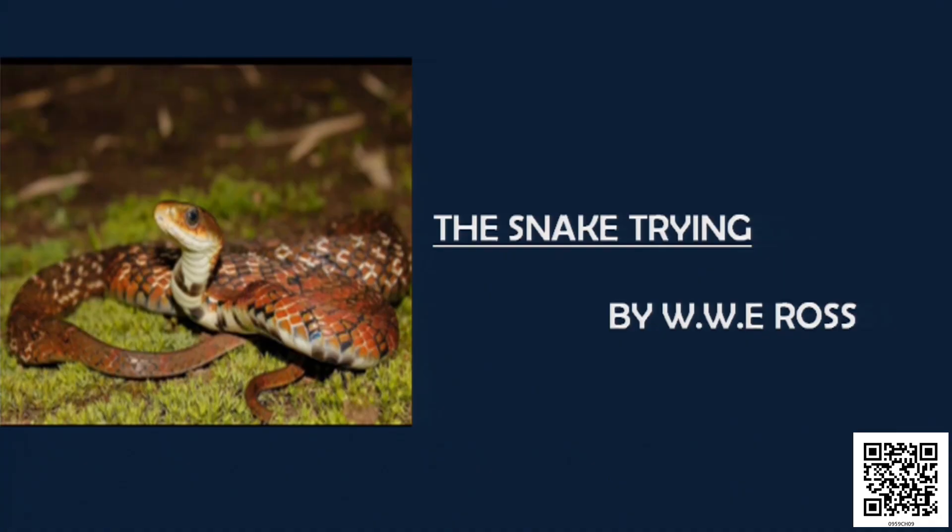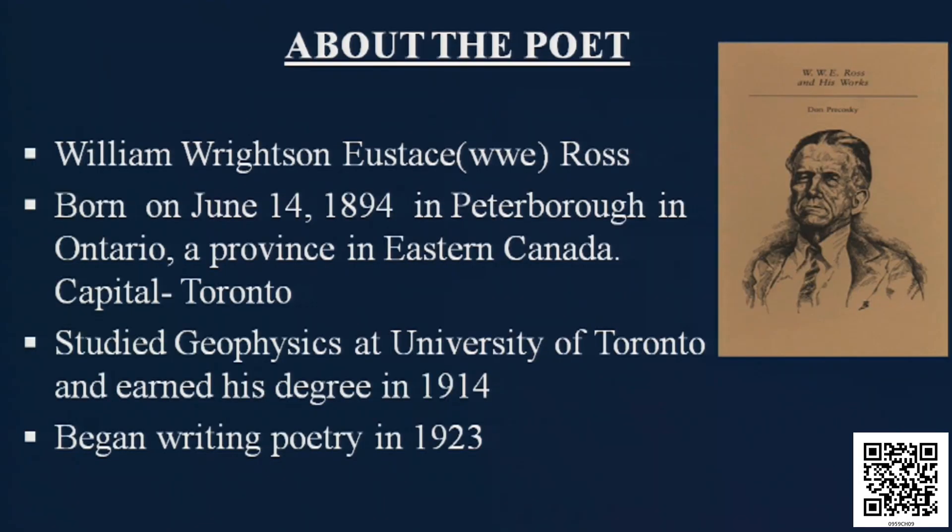You can see 'The Snake Trying' by W.W.E. Ross. Let me tell you something about the poet. W.W.E. stands for William Ritson Eustace Ross. He was born on June 14th, 1894, in Peterborough, Ontario, which is a province in eastern Canada whose capital is Toronto. He studied geophysics at the University of Toronto and earned his degree in 1914.